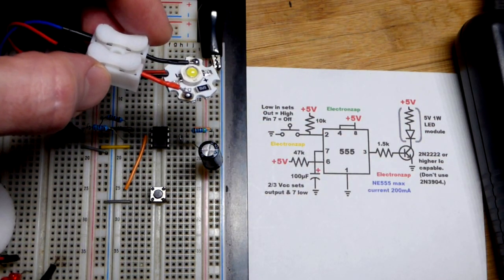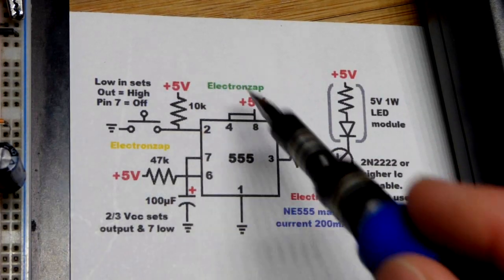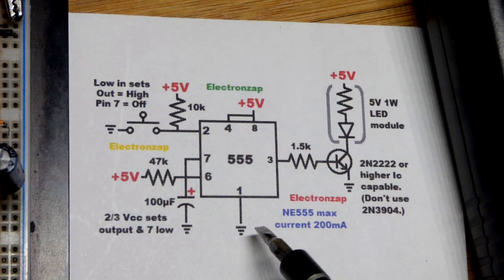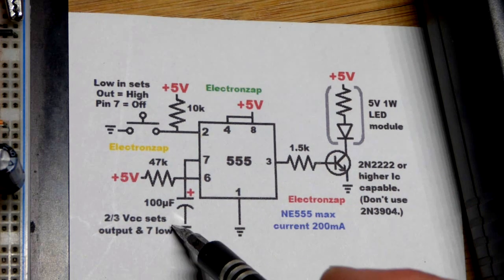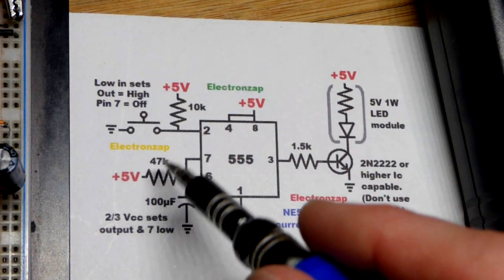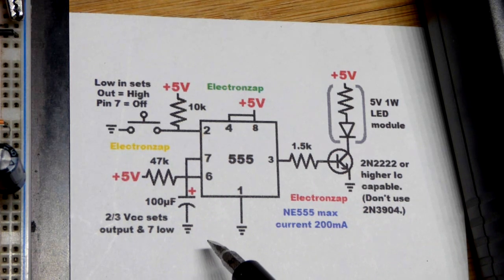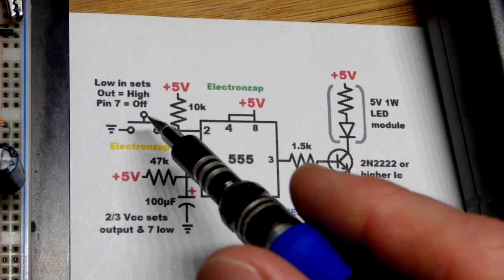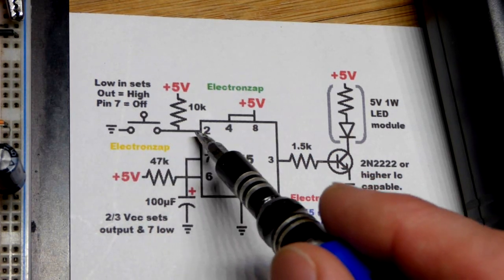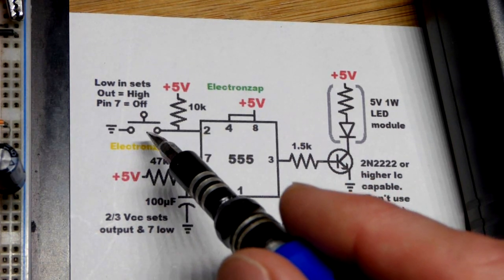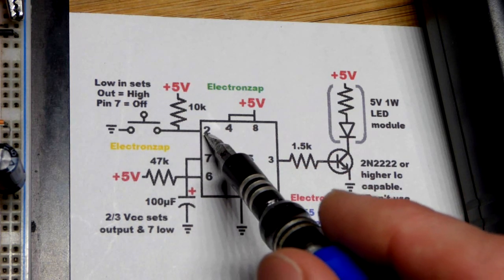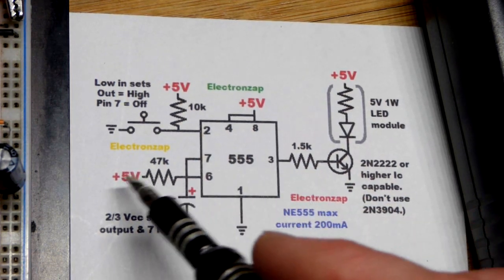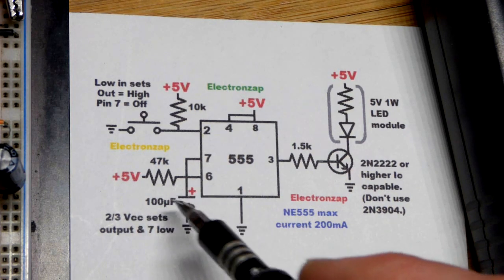And zooming into the schematic that I drew, I actually copied the monostable mode 555 timer from an earlier video. So I have some extra notes. I changed the values of the components though for this video. And we have it in monostable mode which means we close the switch that gives a low signal to pin 2. And we got to release the switch before the timing is done.